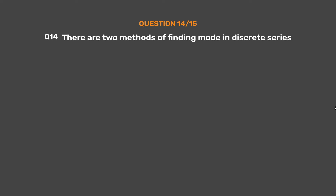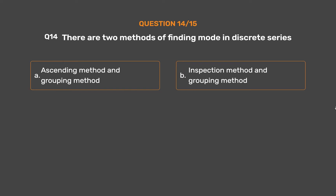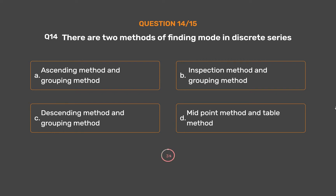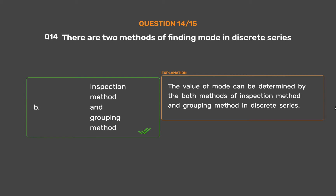Question number 14. There are two methods of finding mode in discrete series. Option A: Ascending method and grouping method. Option B: Inspection method and grouping method. Option C: Descending method and grouping method. Option D: Midpoint method and table method. The correct answer is Option B: Inspection method and grouping method. The value of mode can be determined by both the inspection method and grouping method in discrete series.